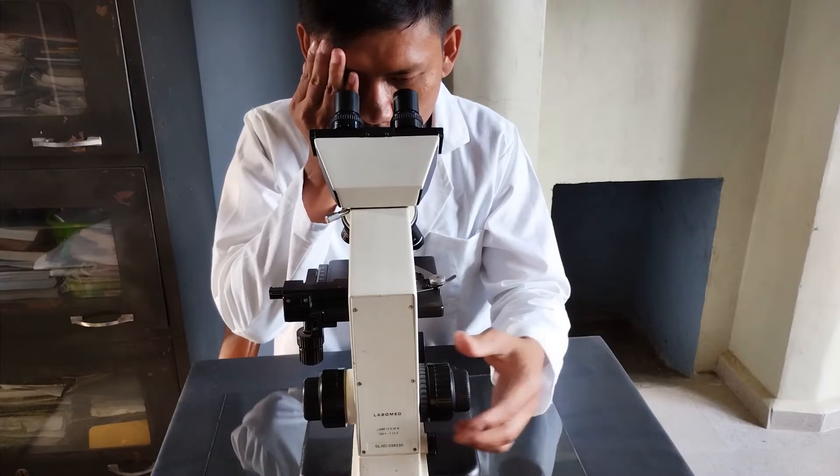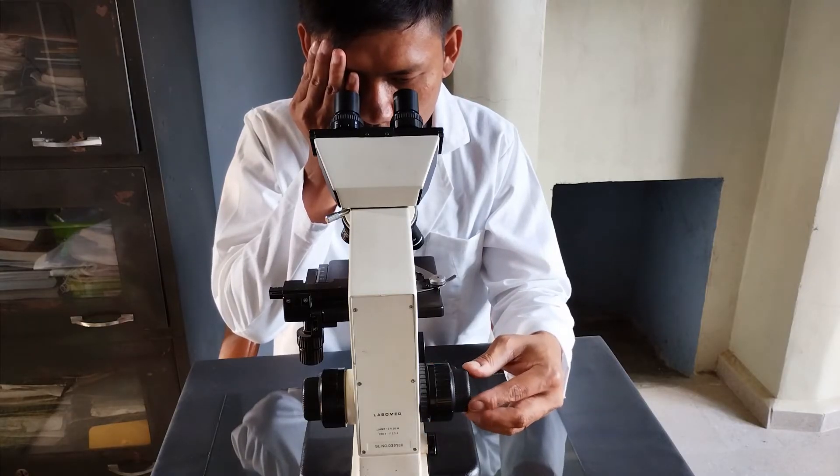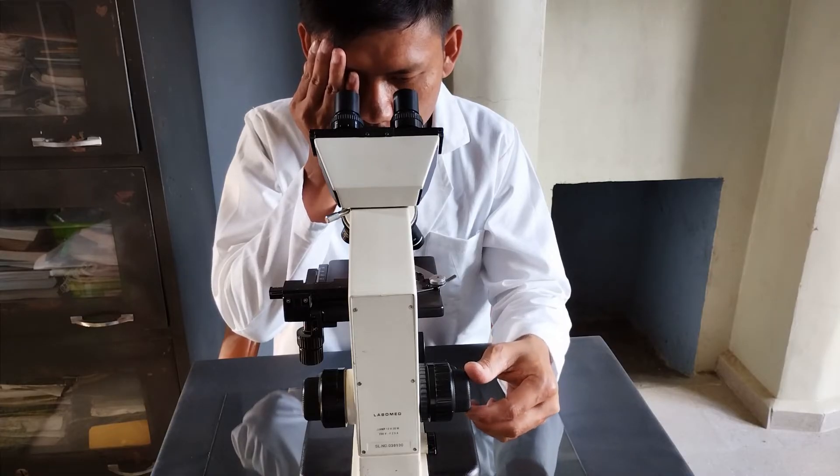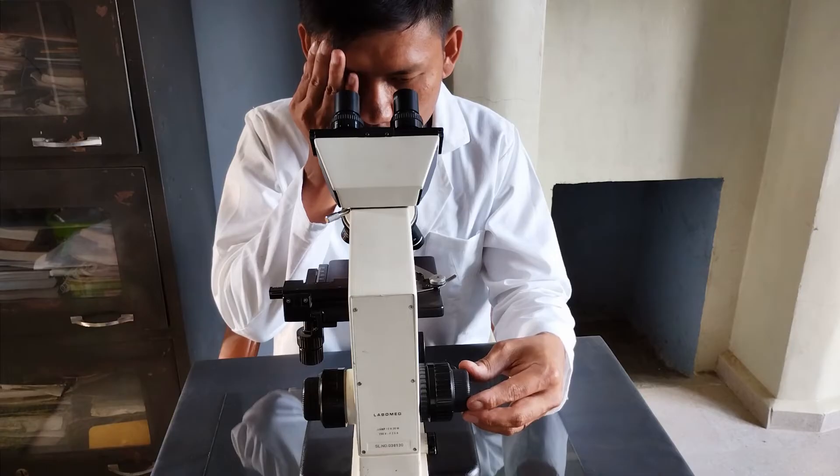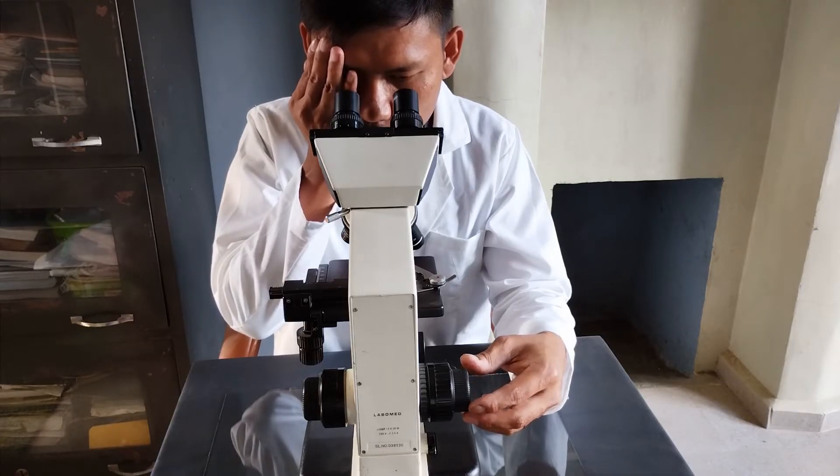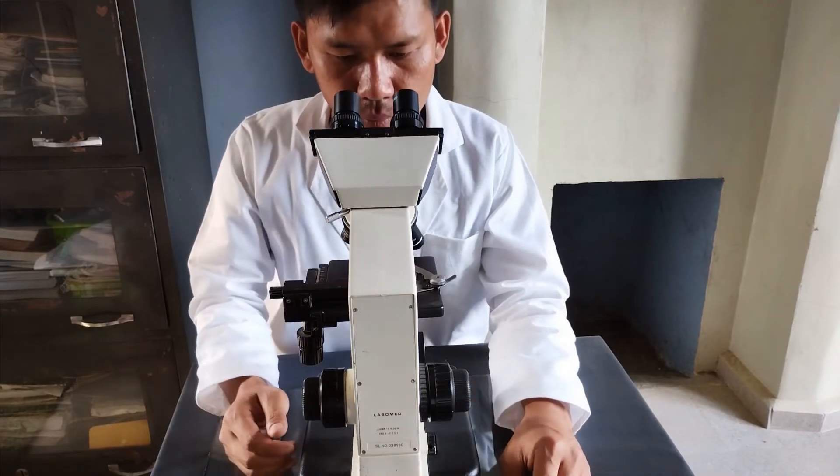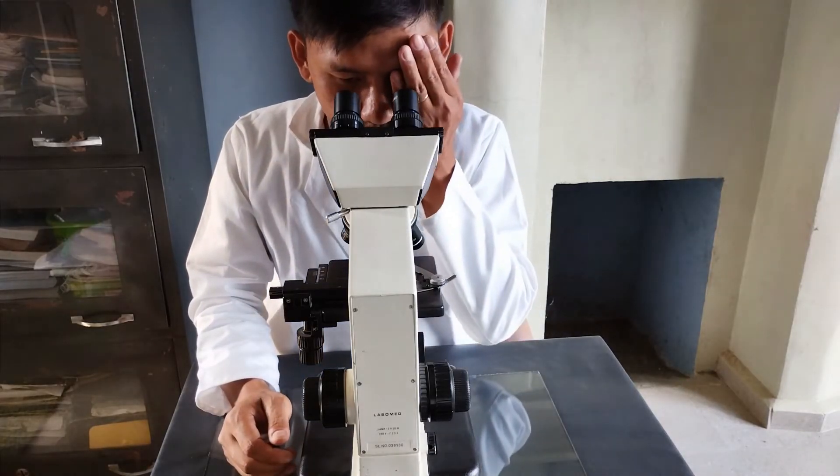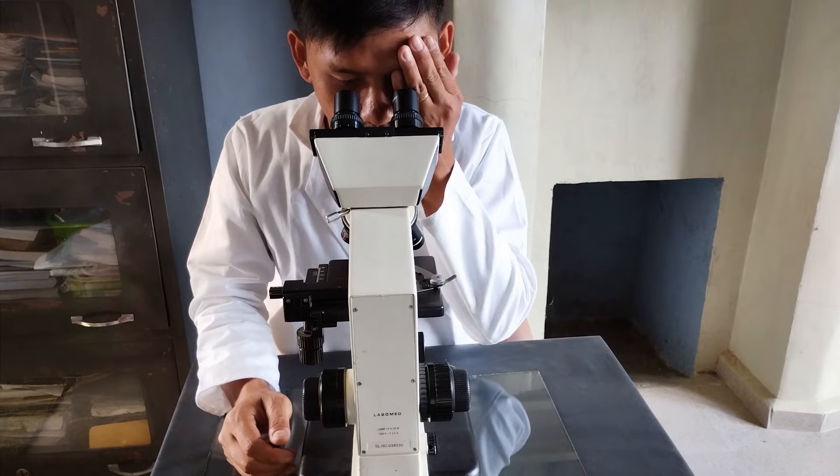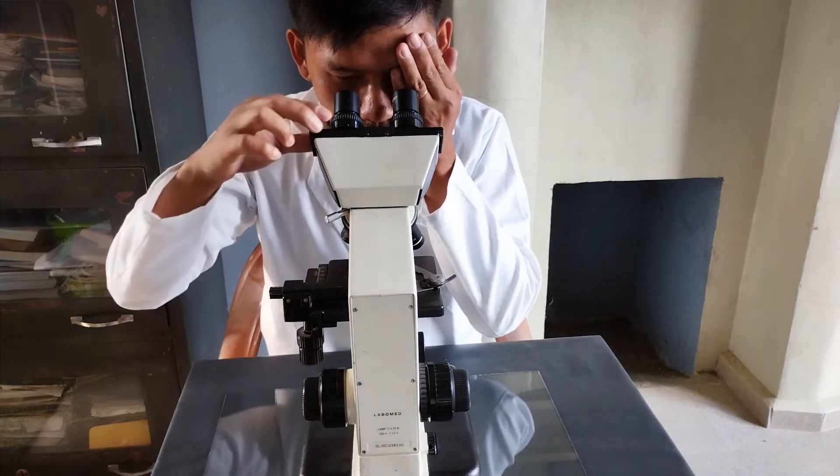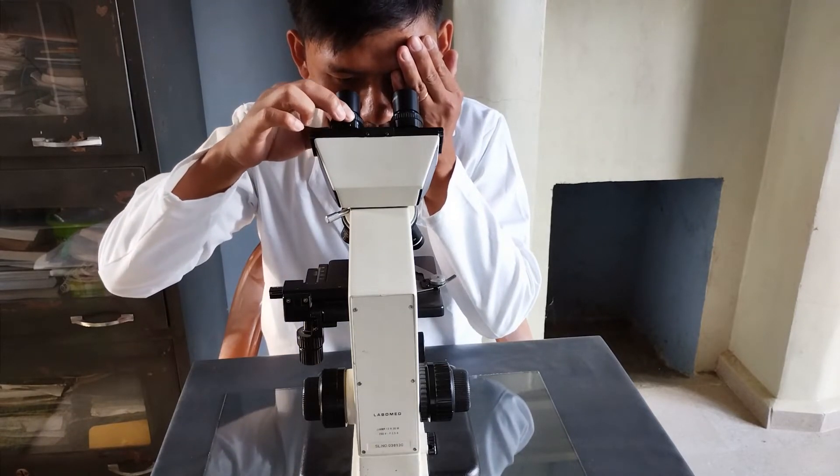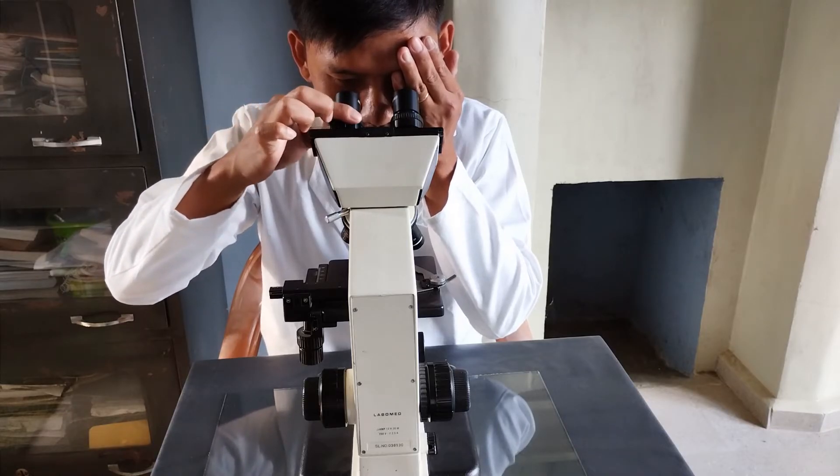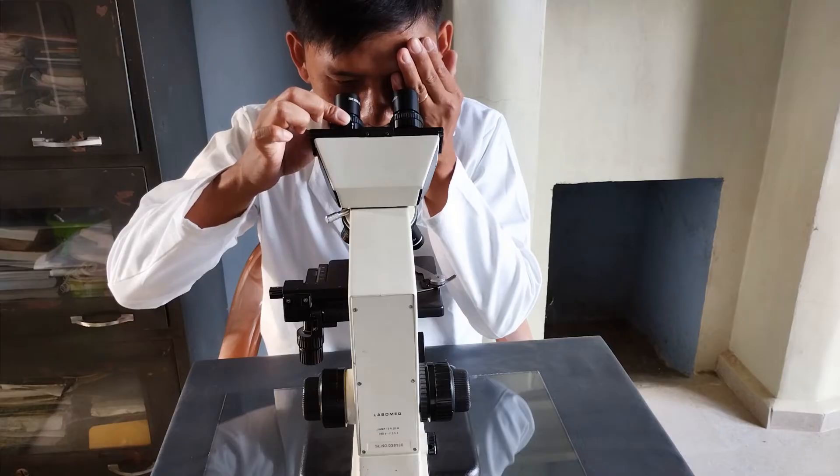Then carefully rotate the coarse adjustment knob clockwise until the specimen becomes visible and is more or less in focus. Once the specimen comes into view, use only the fine adjustment knob to bring the specimen into sharp focus by rotating the fine adjustment knob clockwise or counterclockwise. Once you have the specimen in focus through the left eyepiece, cover the left eye and then look through the right eyepiece using the right eye. Without touching the coarse or fine adjustment knobs that had already been set for the left eye, adjust the focus of the right eye by rotating the eyepiece tube clockwise and or counterclockwise until the specimen comes into clear focus.